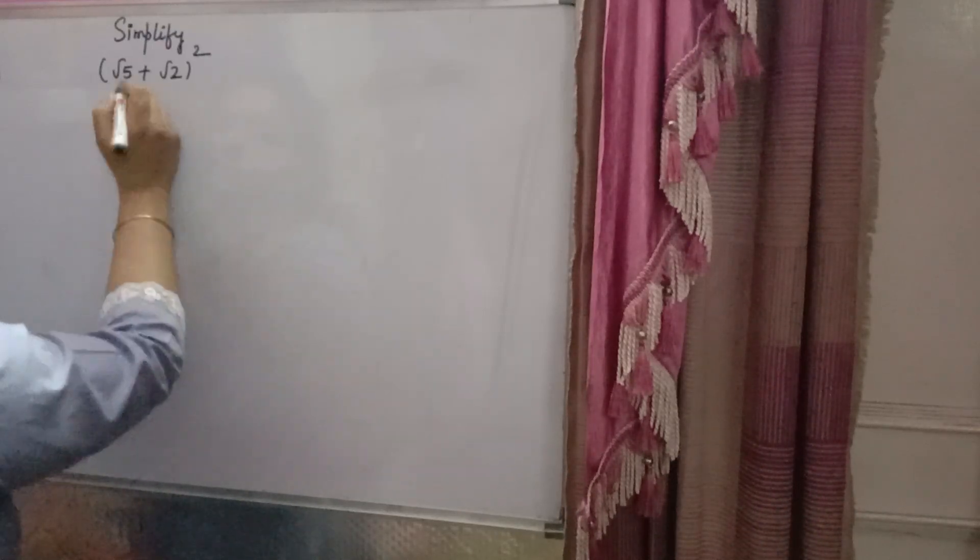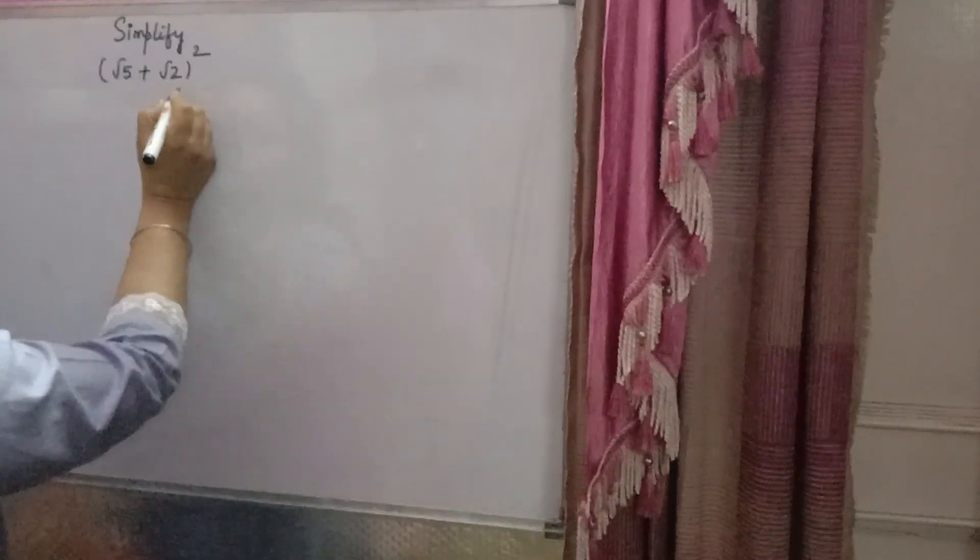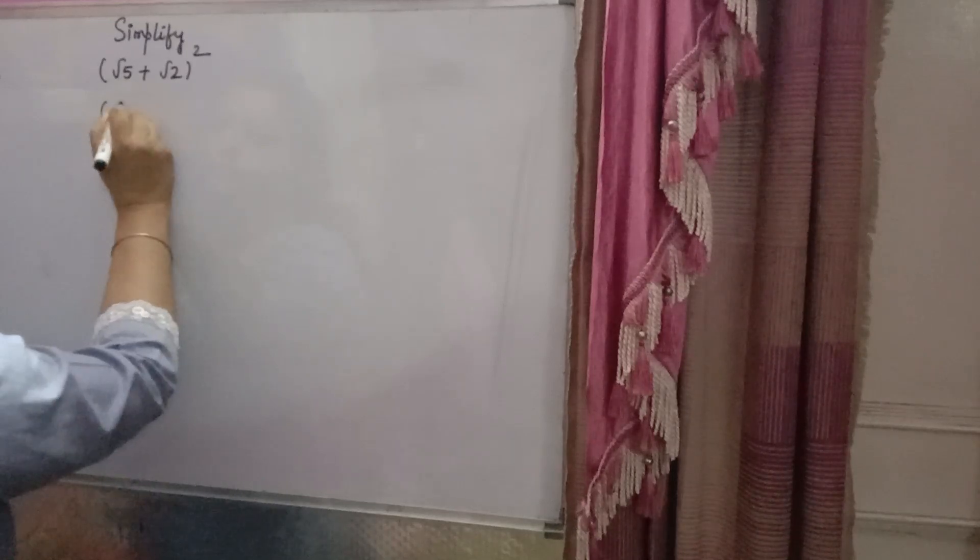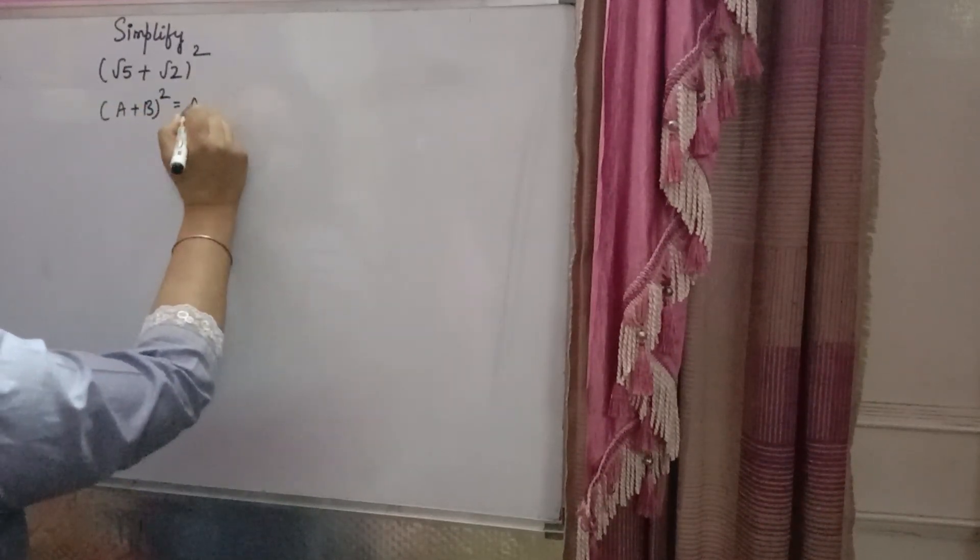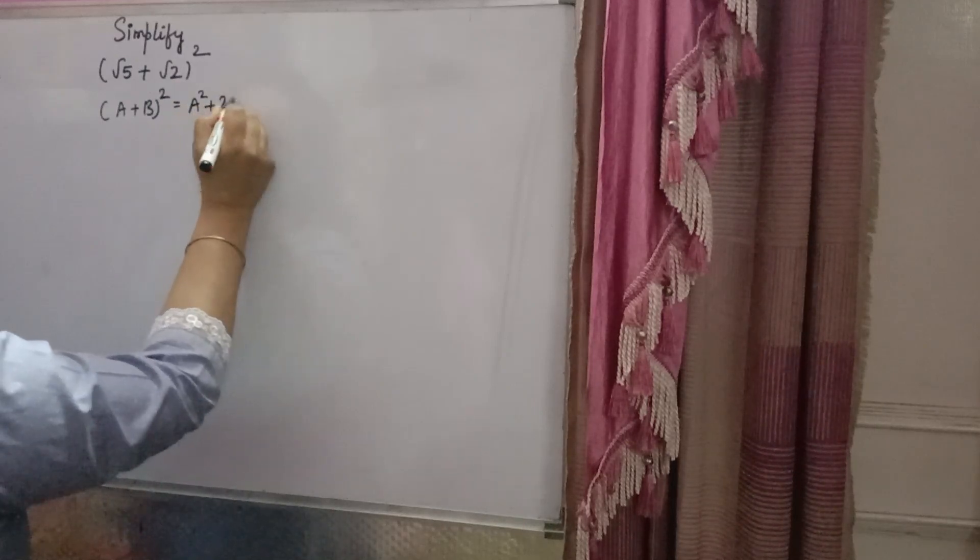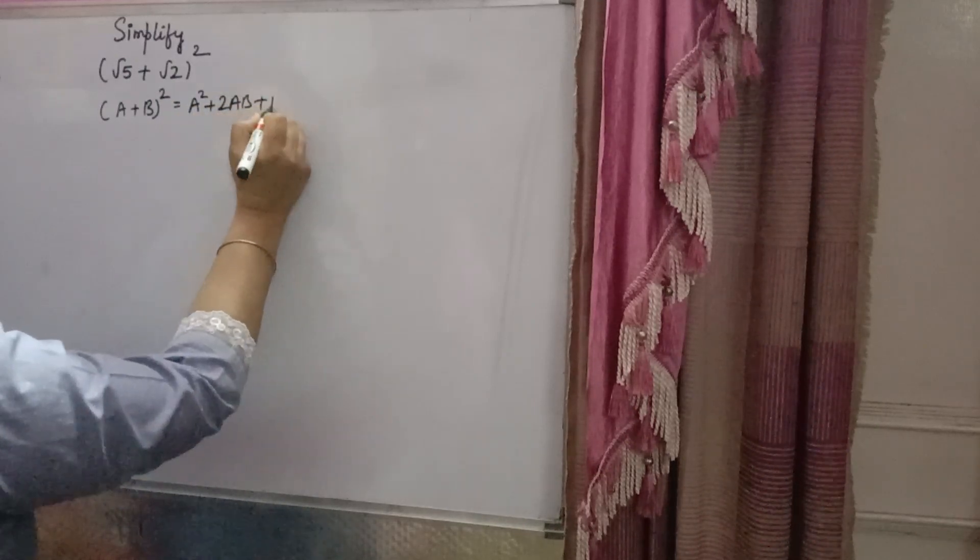(√5 + √2)² - you have to find the whole square of this number. So you will write the formula: (a + b)² = a² + 2ab + b².